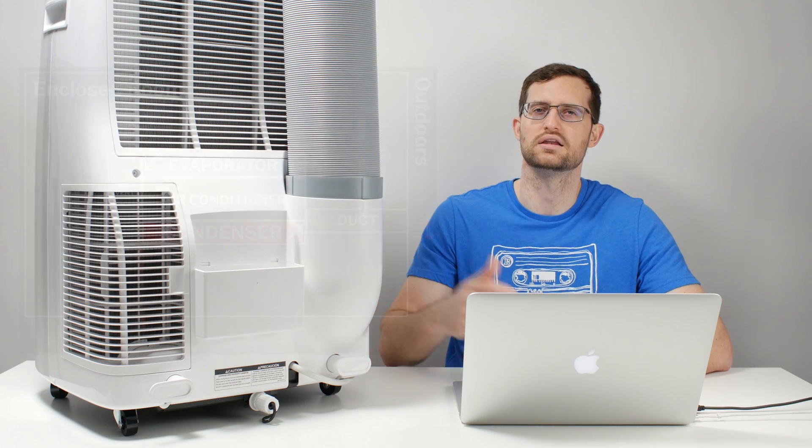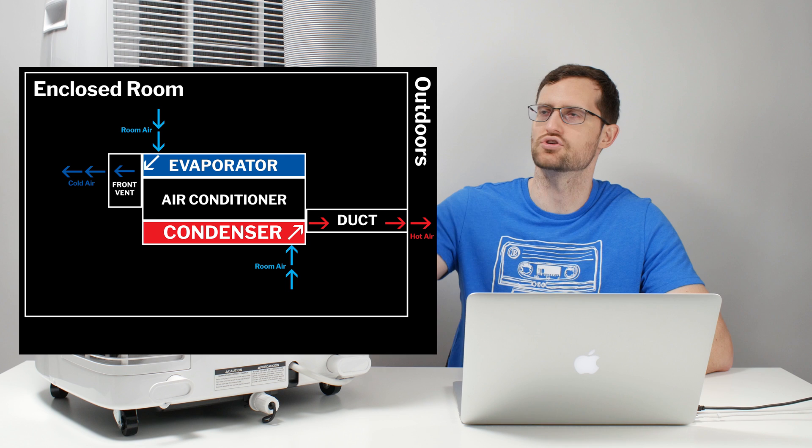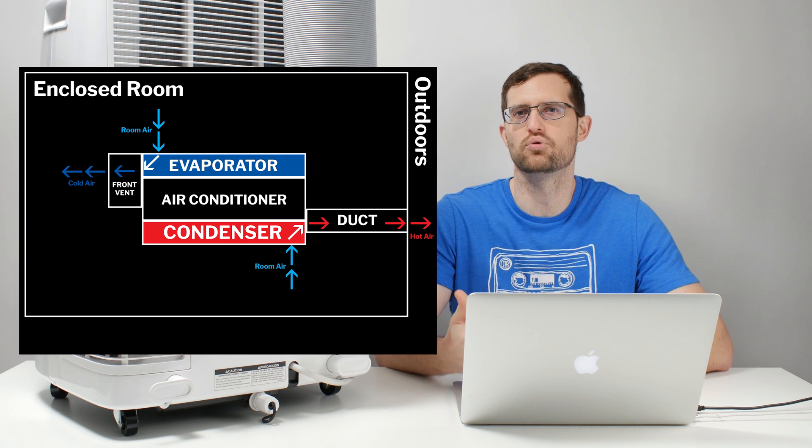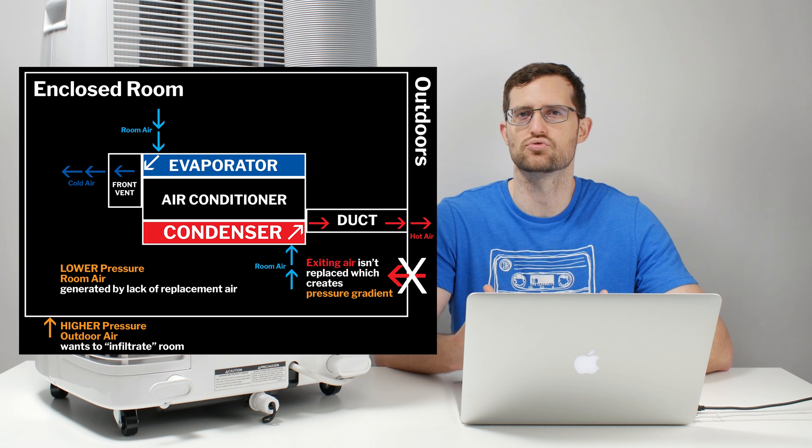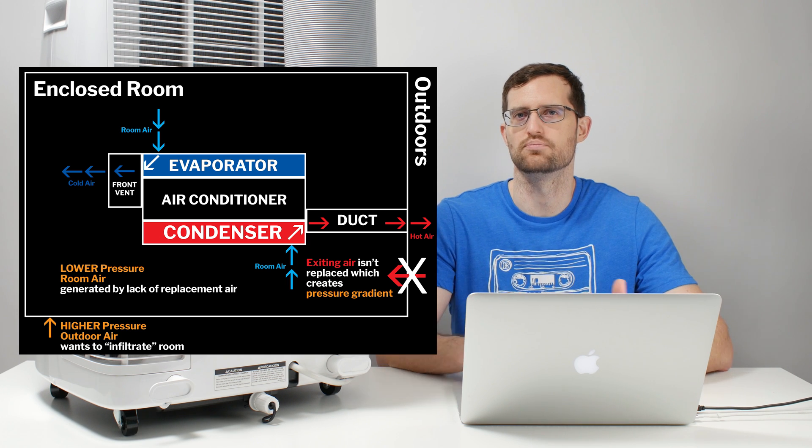It pulls in air through that grill to cool the condenser and then that air is heated up and then it's exhausted through the duct out through the window. And as it pulls in that air, it's not actively working to replace that air. There's no source of replacement of air as air is getting pulled out of the room.